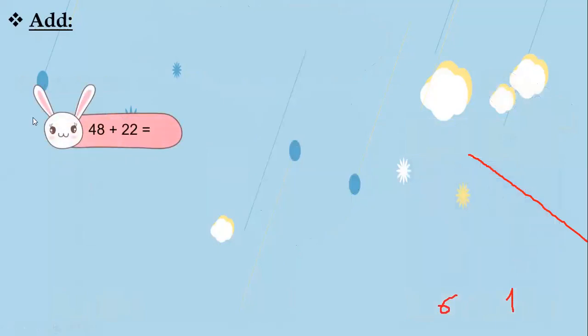Now we have 48 plus 22. We will add ones with ones and tens with tens — don't forget the carry. I will write the place for each digit: ones and tens. I will add 8 plus 2 — 8 in my mind and 2 on my fingers. After 8: 9, 10. I will write the whole 10. Bravo, Maya and Yahya! I will write 0 and carry up 1.